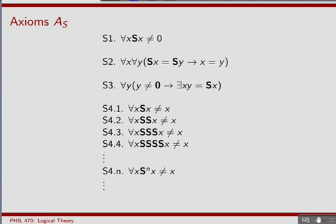Here is a set of axioms — just formulas in our language. The first axiom says that the successor applied to anything is not zero. The second axiom says that the successor function is one-to-one. The third says that every non-zero element must have a predecessor: for every y that's not equal to zero, there must exist some x such that y is the successor of x. The remaining infinitely many axioms say that no matter how many times you apply the successor function to some element x, you'll never loop back and reach x.